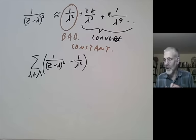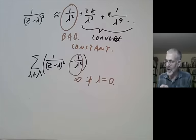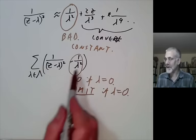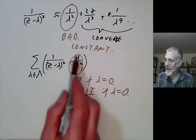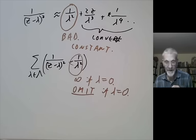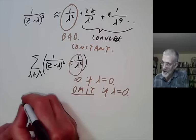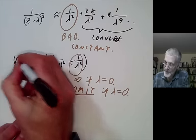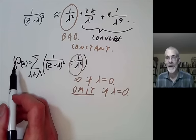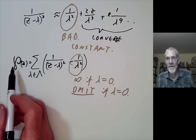We omit the λ = 0 term, so the sum is over all λ ≠ 0. This is the famous Weierstrass ℘ function, defined by this sum. Weierstrass used a capital P from a script alphabet — every letter of that script seems to have been lost except for ℘, which lives on as a strange fossil in the mathematical literature.